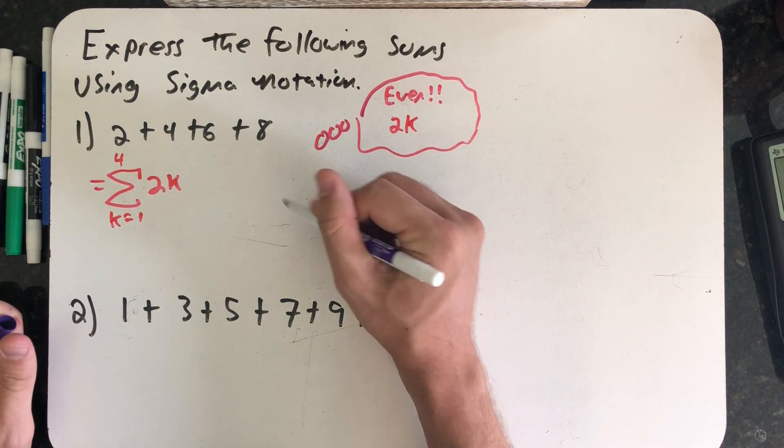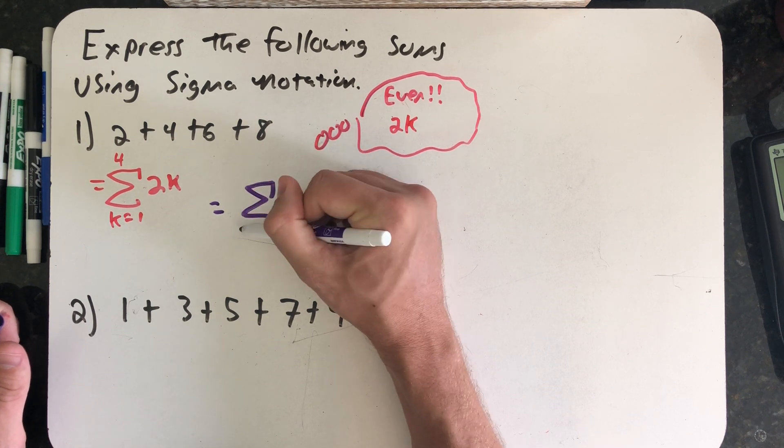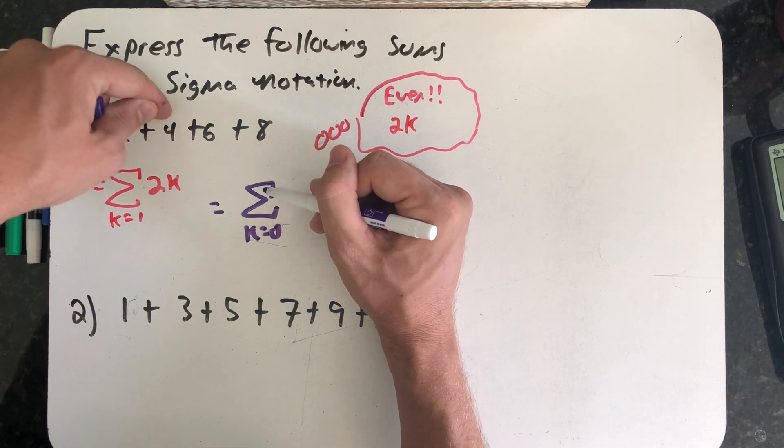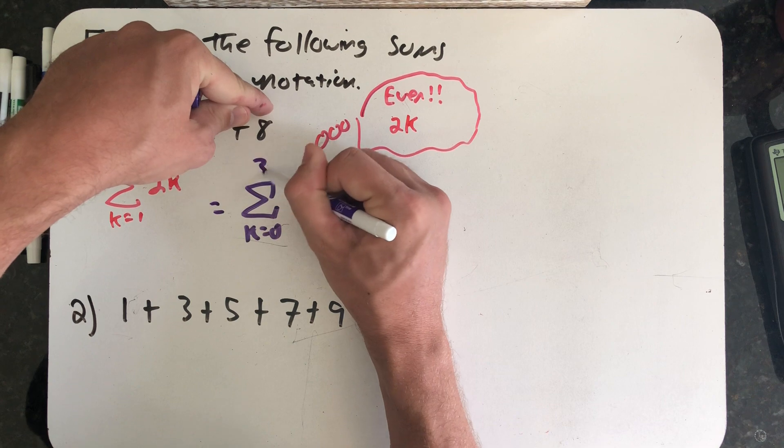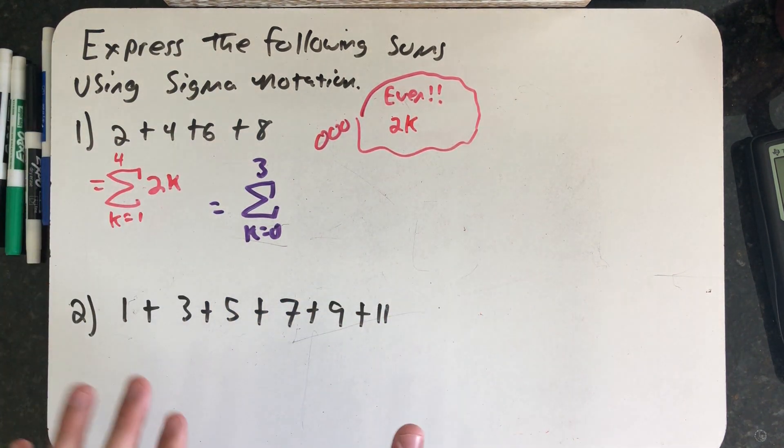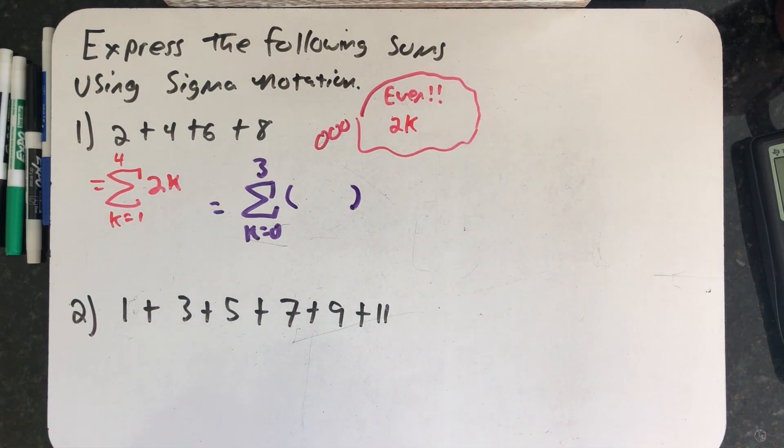But maybe someone, maybe one of you thought, well what if I wanted to start my sum at 0? Well then I have a 0 term, a first term, a second term, and I need to stop when k is equal to 3. I was actually thinking maybe you should pause the video and see if you can fill in a formula here that would still work and give me a different way of expressing this same sum in sigma notation.